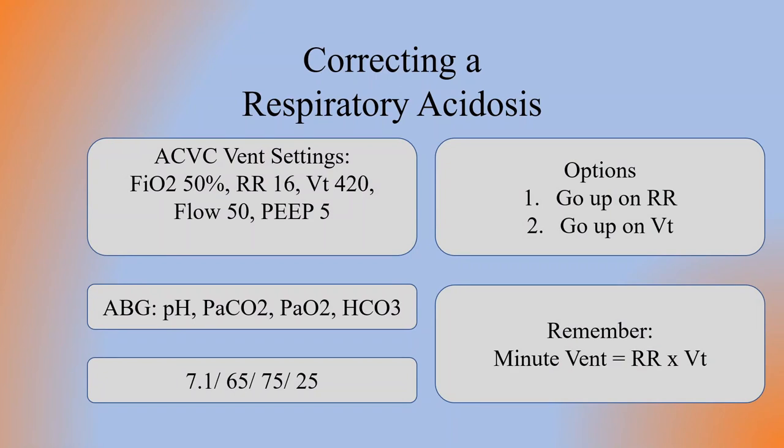and a PEEP of 5, and then we have this ABG come back at 7.1, 65, 75, and 25 — we would say that is a respiratory acidosis. So we have two options: we can either go up on the respiratory rate or go up on the tidal volume. Remember, respiratory rate times tidal volume equals minute ventilation. Minute ventilation is truly what we're trying to increase. You can increase either one and achieve a higher minute ventilation.